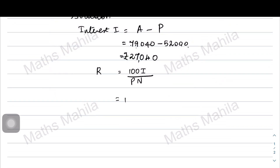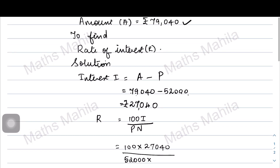Substituting values: 100 multiplied by I, where I is 27,040, divided by P which is the principal 52,000, multiplied by N which is 4 years.